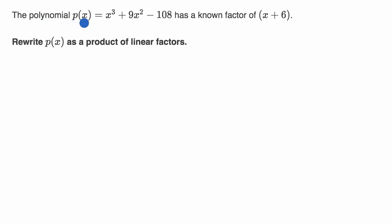We're told the polynomial p(x), which is equal to x³ + 9x² - 108, has a known factor of (x + 6). Rewrite p(x) as a product of linear factors. Pause this video and see if you can have a go at that.